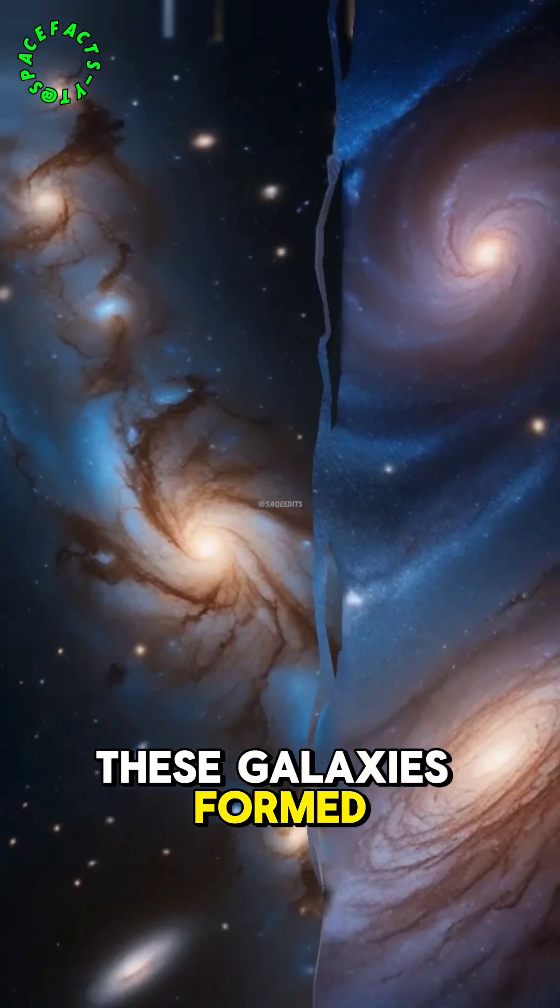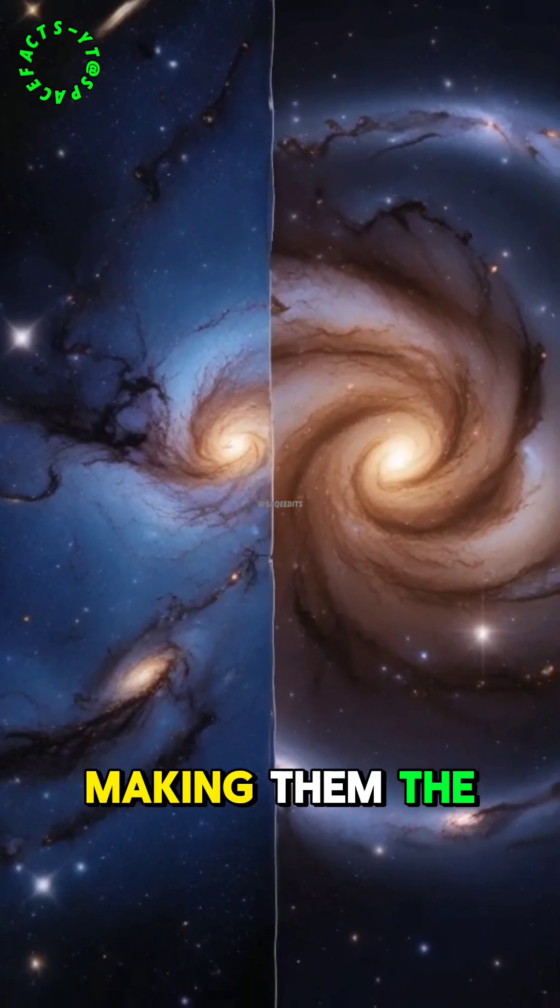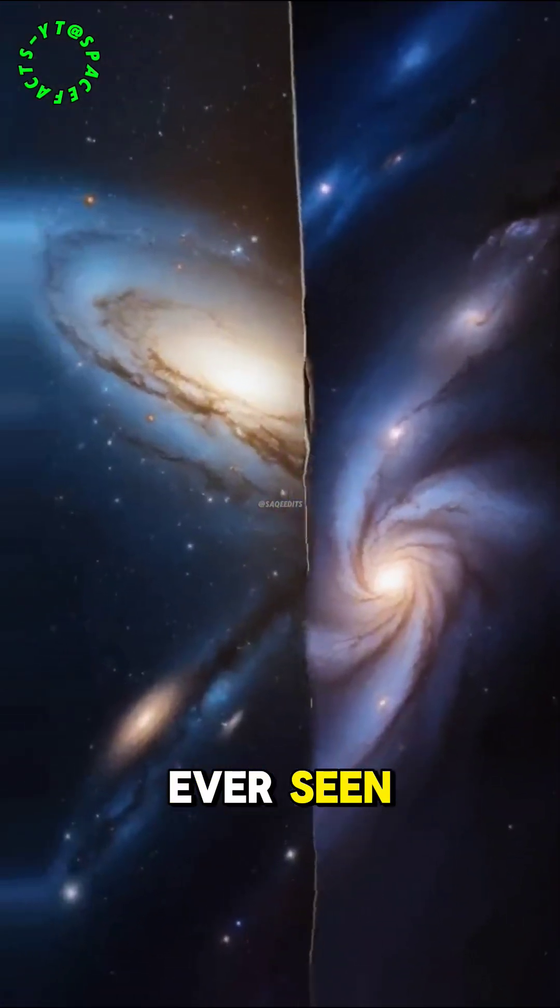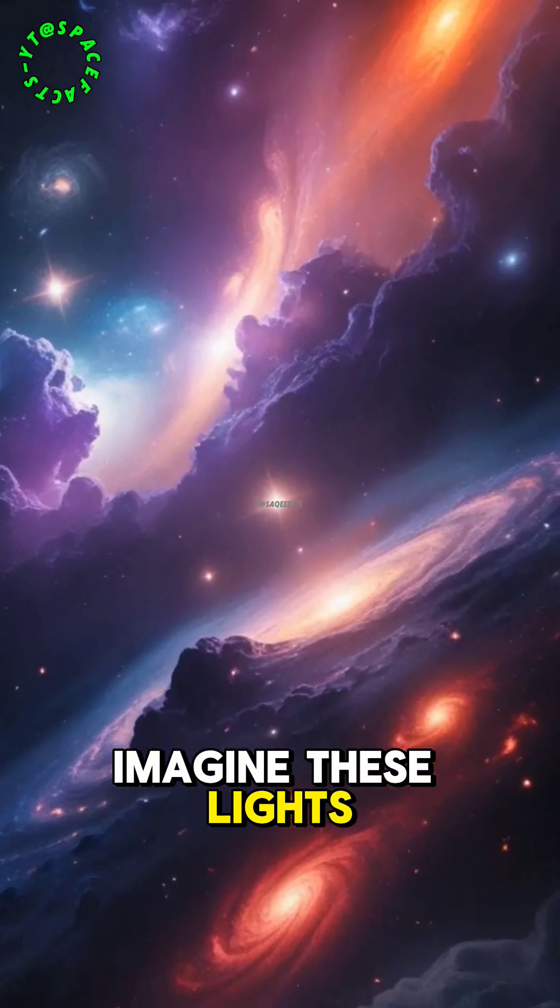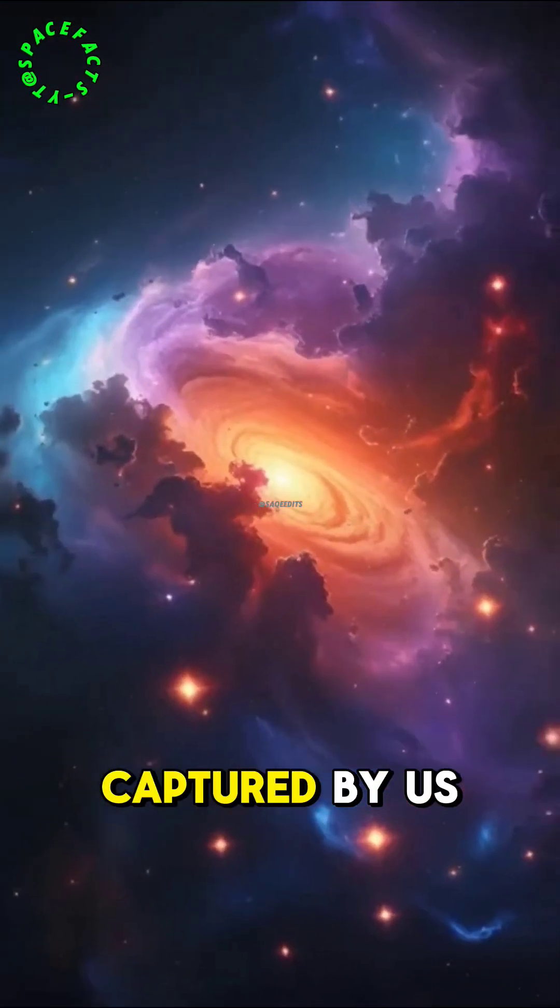These galaxies formed just 300 million years after the Big Bang, making them the oldest light we've ever seen. Imagine, these lights traveled for over 13 billion years, only to be captured by us now.